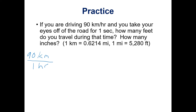We need to go from kilometers to feet and from hours to seconds, so let's deal with the kilometers-to-feet piece first. We have one kilometer equals 0.6214 miles and one mile equals 5,280 feet. We put one kilometer on the bottom because we want to get rid of kilometers, and then we have one mile over 5,280 feet, putting one mile on the bottom.